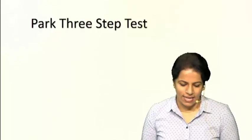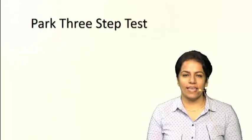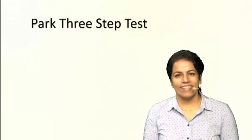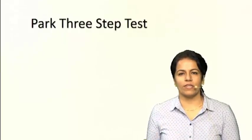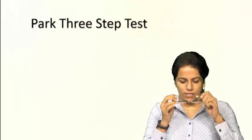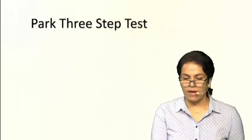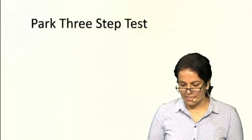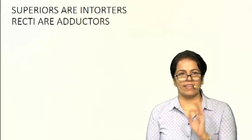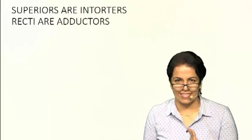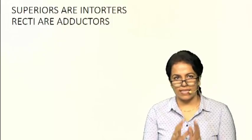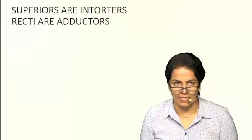Before we go into this, let's revise a few important things regarding action of muscles. When you are talking about action, horizontal muscles are very simple. Coming to vertical muscles, the two important points to keep in mind: superiors are intortors and recti are adductors. This makes our lives simple to understand the action of different muscles. Let's keep this in mind when discussing the PARC 3-step test.